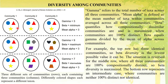Mean alpha is three, since each community has three species and three plus three plus three equals nine, divided by three communities. Beta equals gamma divided by mean alpha, so three divided by three equals one — the lowest possible value. This makes sense because all three communities are identical, so beta diversity is at its minimum.